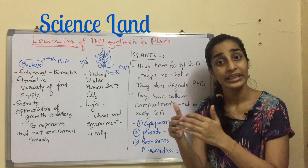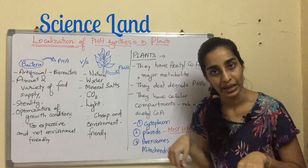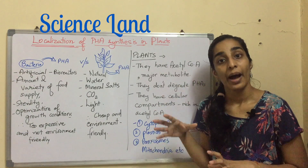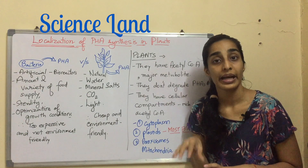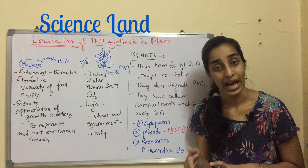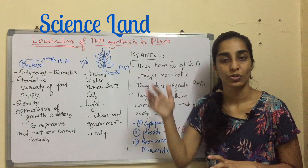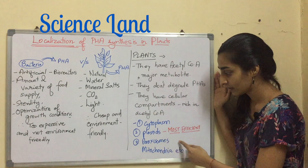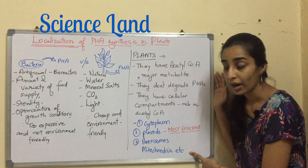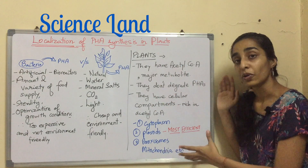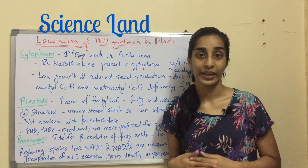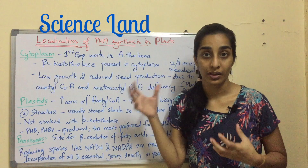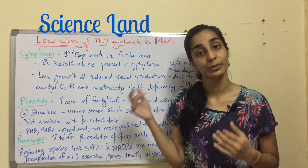Third, plants have cellular compartments which are rich in acetyl coenzyme A. There are certain areas in a plant cell — restricted areas — where acetyl-CoA is already sufficiently present to produce PHA. These compartments include the cytoplasm, plastids, peroxisomes, and mitochondria, which we will be talking about shortly.